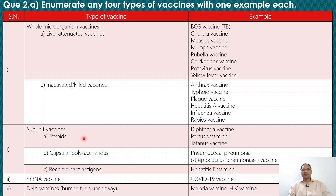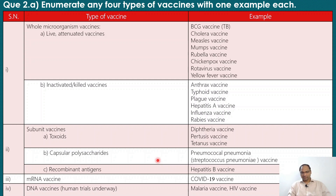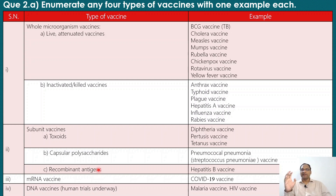The second subtype is the capsular polysaccharide vaccine. Streptococcus pneumoniae has a capsular polysaccharide with antigenic properties, and this is used in a vaccine for prevention of pneumococcal pneumonia. The third subtype uses recombinant antigens — a molecule of the bacteria or virus is extracted, and large amounts of this antigen are produced using recombinant DNA technology. An example is the hepatitis B vaccine, which uses the hepatitis B virus surface antigen produced by recombinant DNA technology.